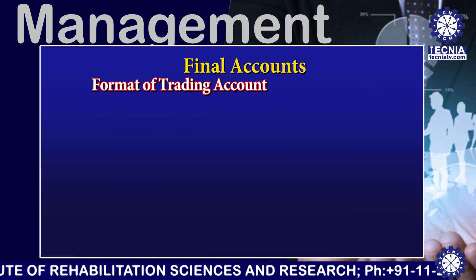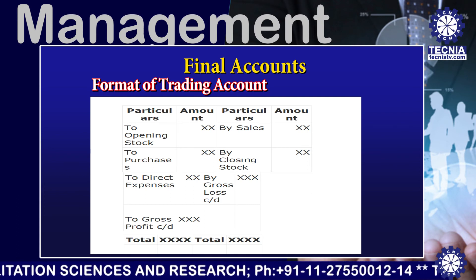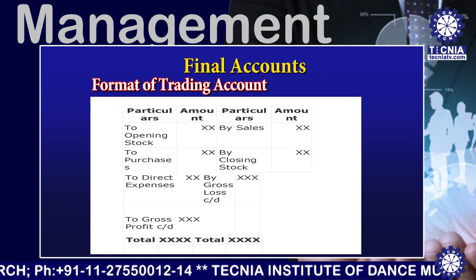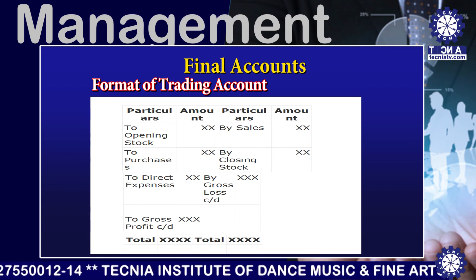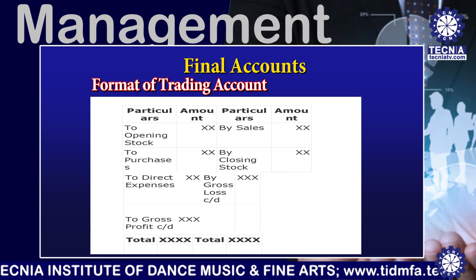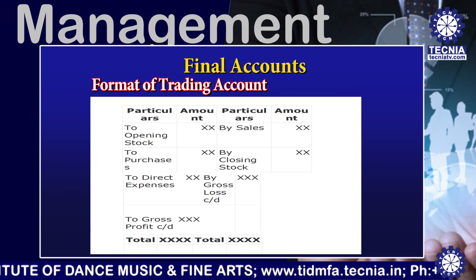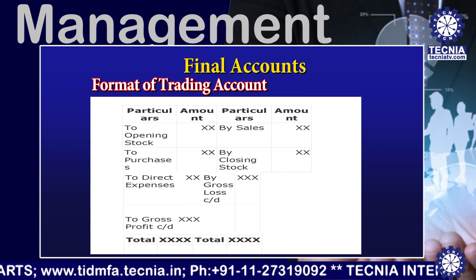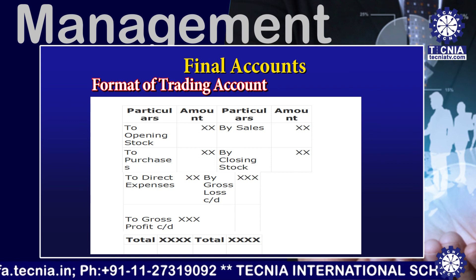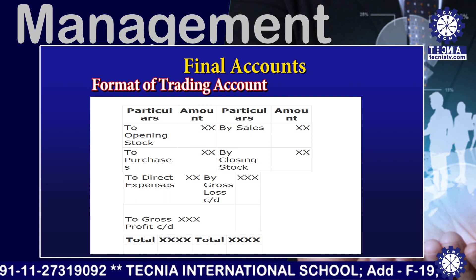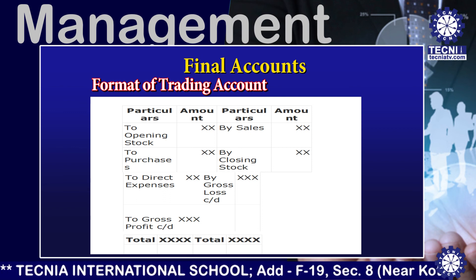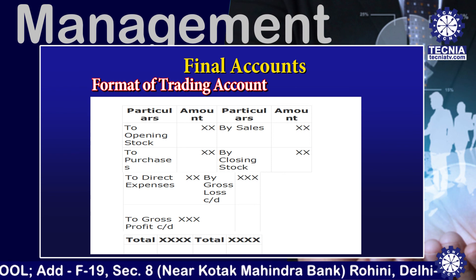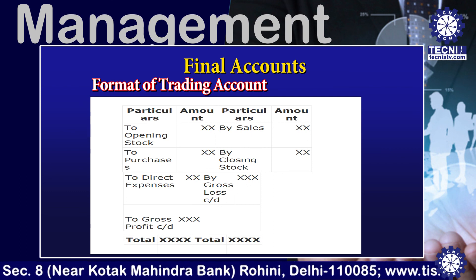Now let us discuss how the trading account is prepared. The trading account has two sides: debit and credit. On the debit side, first record the opening stock, then net purchases, then all direct expenses incurred before the production process. On the credit side, record the sales and the closing stock. After that, balance the trading account to find the gross profit or gross loss. If expenses exceed revenue, there is a gross loss; if revenue exceeds expenses, there is a gross profit. This gross profit is then transferred to the profit and loss account to calculate the net profit of the business.